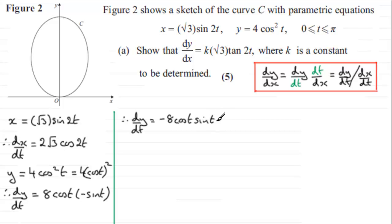And that means that we're in a position now to get dy by dx because dy by dx is equal to dy by dt divided by dx by dt. So it's going to be for dy by dt minus 8 cos t sine t, and that's divided by dx by dt, which is 2 root 3 cos 2t.